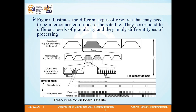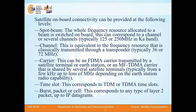The figure shows different types of resources that may need to be interconnected onboard the satellite. They correspond to different levels of granularity and imply different types of processing. In the figure we can see there is a beam level which includes many beams, then a channel level which includes many channels, and inside channels there are different carrier levels. These carriers, when viewed in the time domain, have different time slots which include cells or packets. Let us discuss these levels one by one.